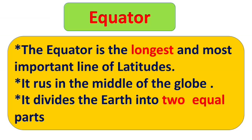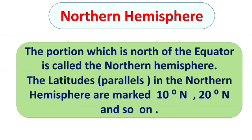Let us have a look at them. First is the northern hemisphere. The portion which is north of the equator is called the northern hemisphere. You can also say the area above the equator is the northern hemisphere. The latitudes or parallels in the northern hemisphere are marked 10 degrees north, 20 degrees north, 30 degrees north, and so on.